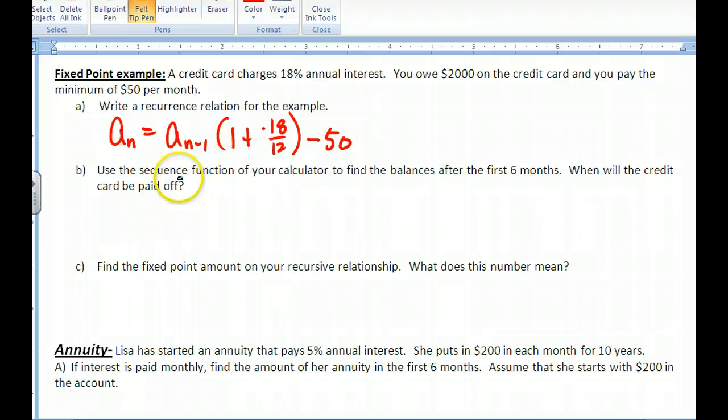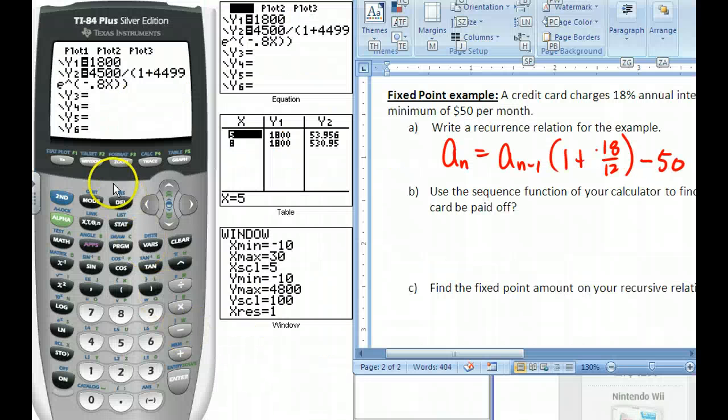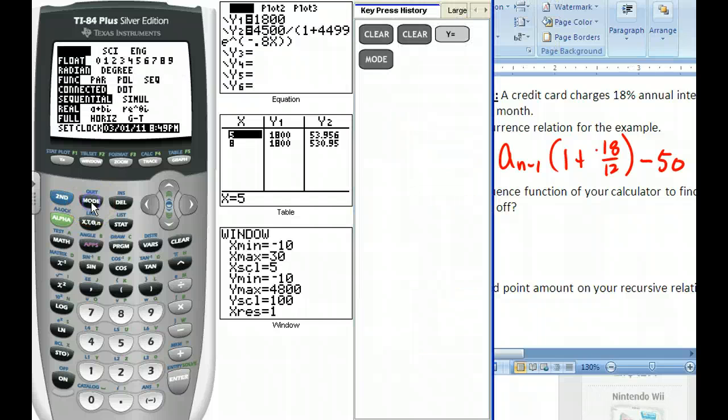Now you should pause and look at that and make sure you understand it. But really, once again, it's my payment or whatever I owe now is equal to what I owed before. They're charging me interest, and then I pay off the $50. Then it says, for part B, use the sequence function of your calculator to find the balances after the first six months. When will the credit card be paid off? So let's go to our calculator, get that out, and see what happens there. Calculator, first thing, put the mode. So we go to mode, and we go down to sequence. And that would be this one. Not sequential, but sequence. And we want to do that one. So we push enter.